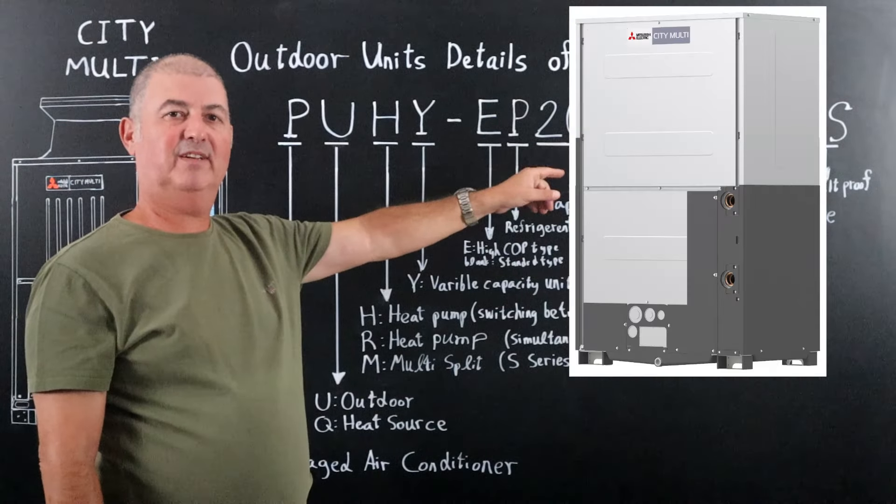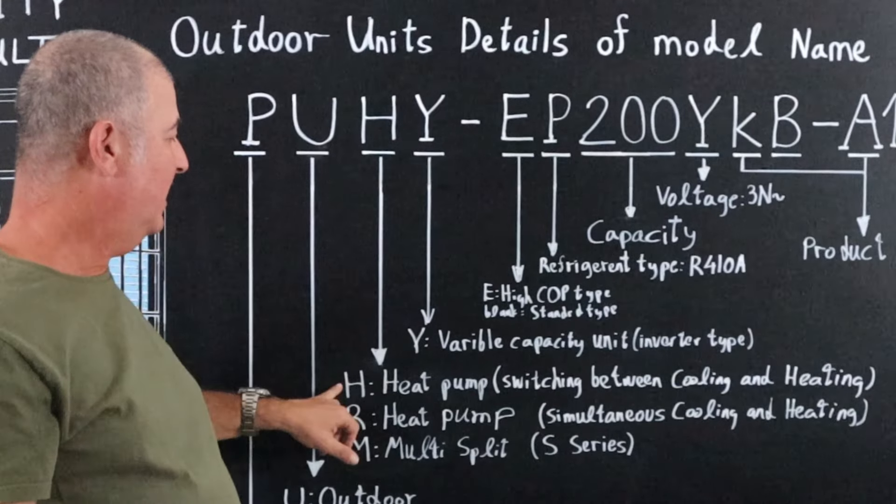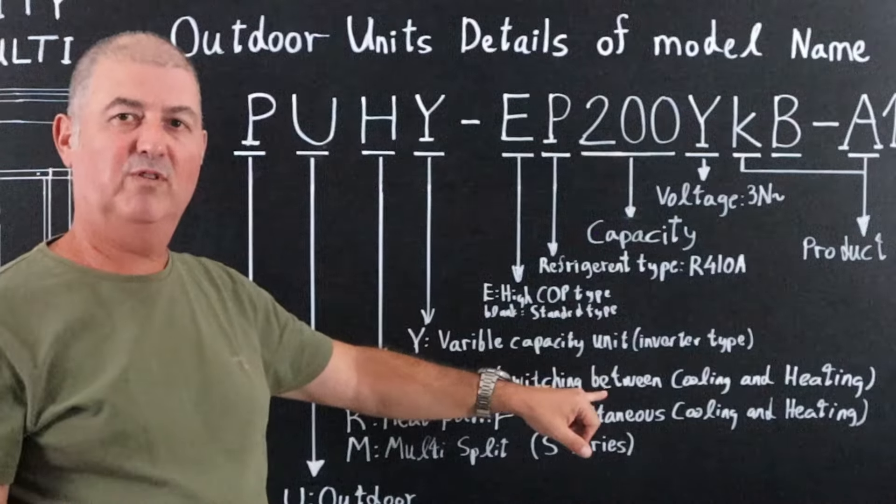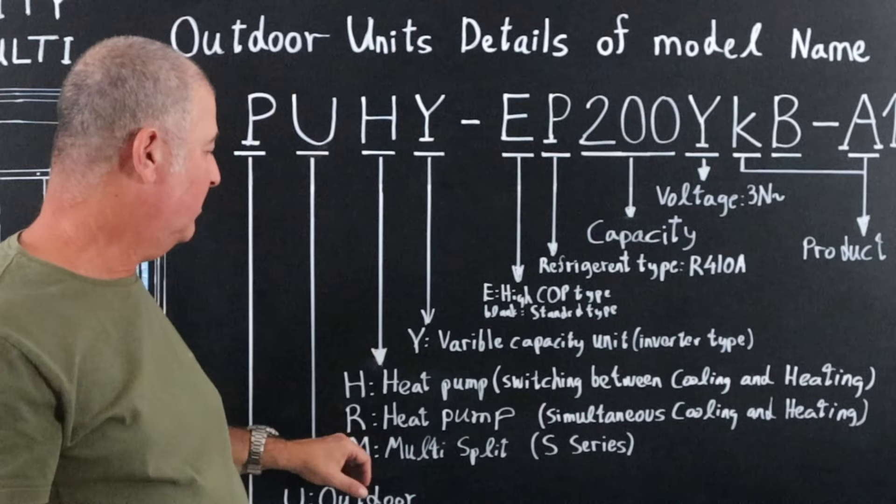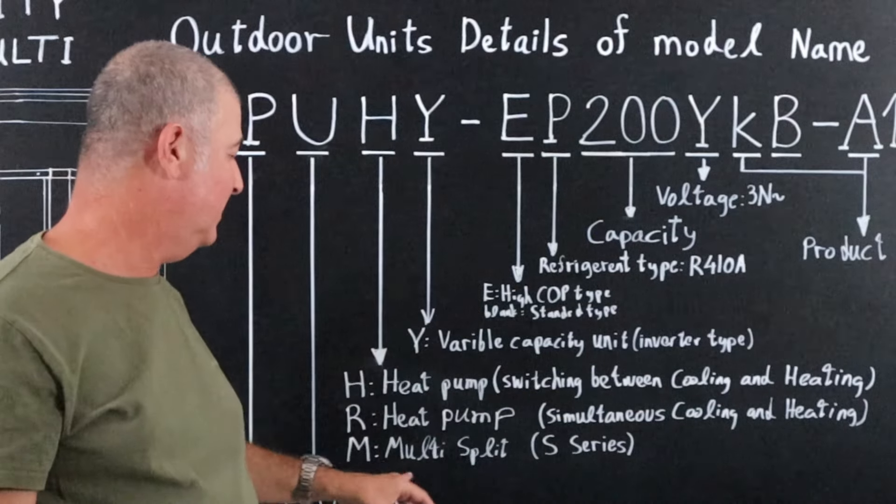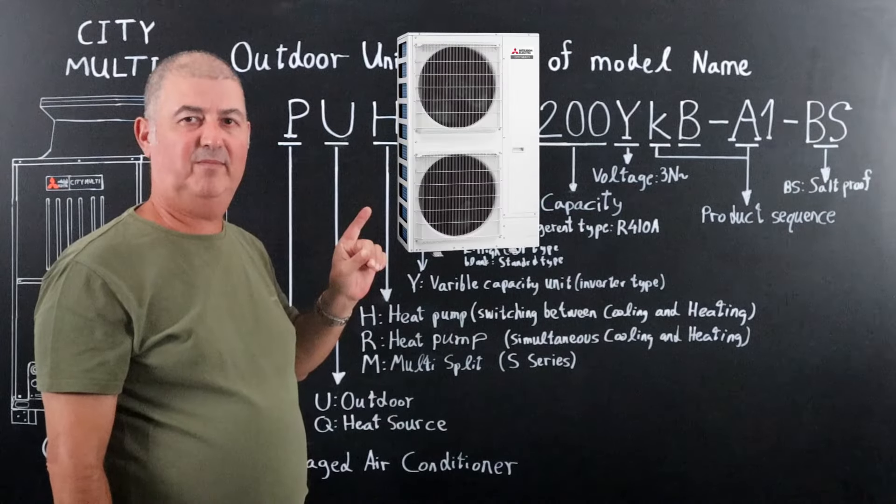The third place is for the unit type. H is for heat pump switching between cooling and heating. R means heat pump simultaneously cooling and heating. And M is for multi-split units, mainly for slim units, as you can see here.